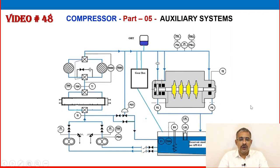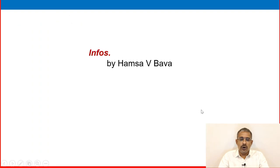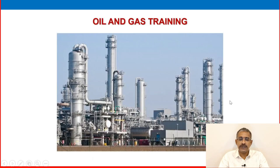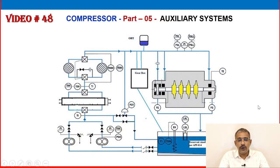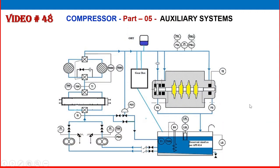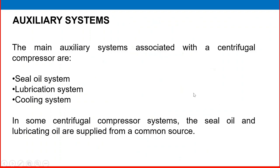Dear friends, welcome to In-Force, welcome to the oil and gas training series. This is my 48th video, compressor 45. In this video we are discussing auxiliary systems in centrifugal compressors — mainly the seal oil system, lubrication system, and cooling system. These are the main auxiliary systems associated with a centrifugal compressor.